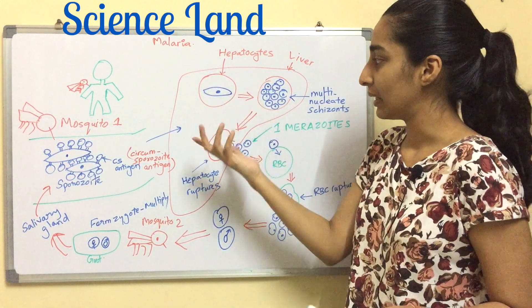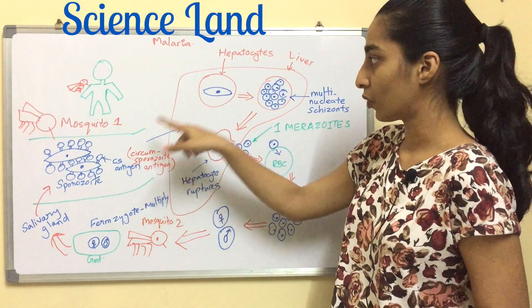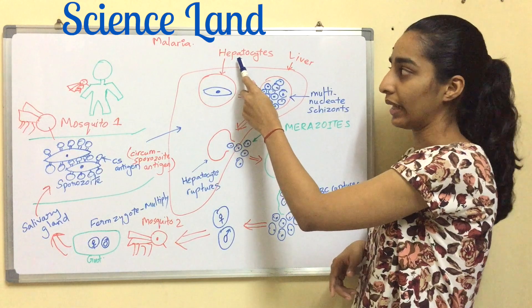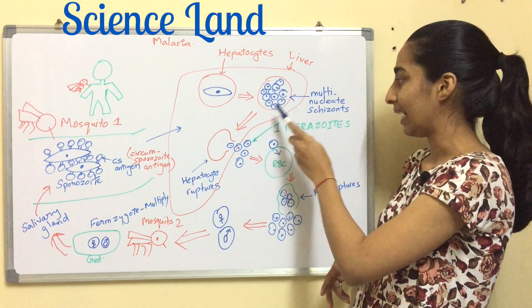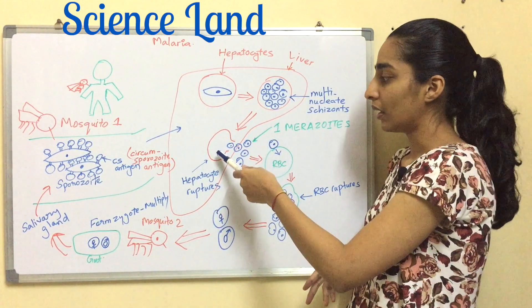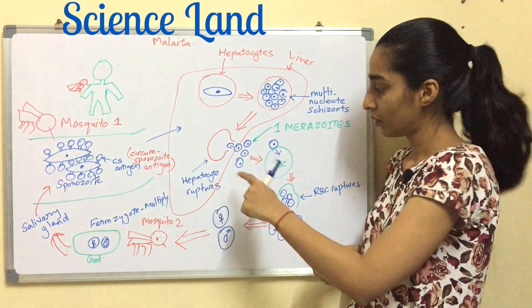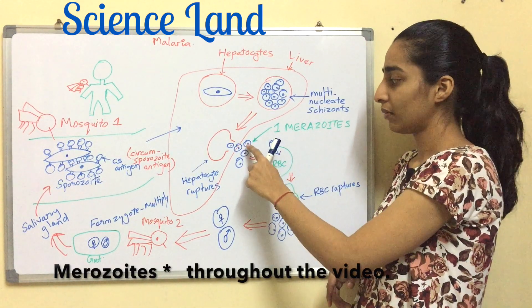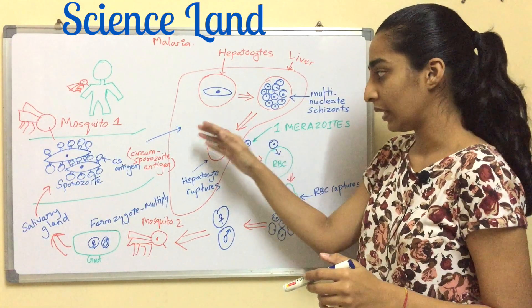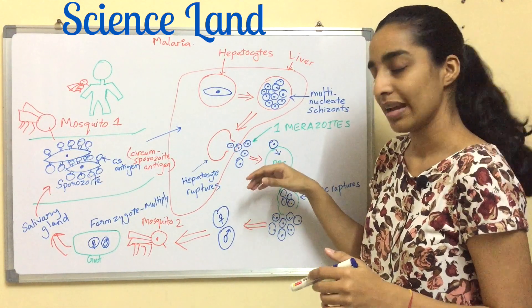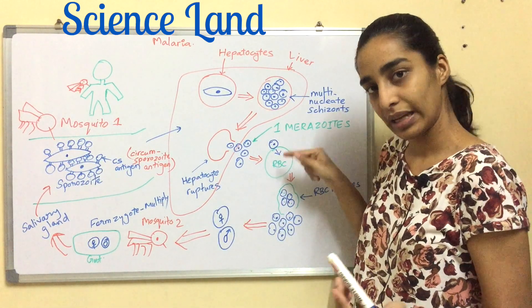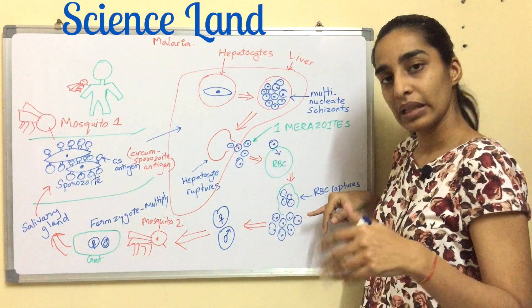The CS antigen mediates adhesion with hepatocytes. The sporozoites are released into the blood, and within 30 minutes they travel to the liver. In the hepatocytes, the sporozoites multiply. The hepatocyte becomes a multi-nucleate cell known as a schizont. After multiplication, the hepatocyte ruptures and releases merozoites — individual blue-colored cells.